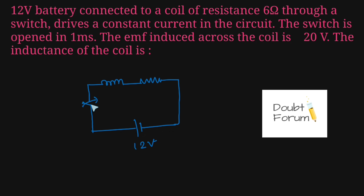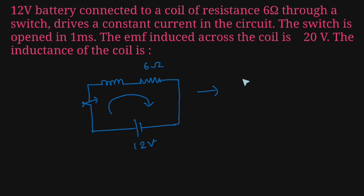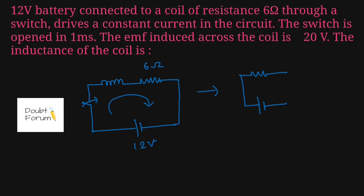Initially, the switch is in its closed position. The resistance is given as 6 ohm, and it is mentioned that there is a constant current flowing in the circuit. In the case of DC voltage, the inductor behaves like a closed circuit, so this circuit represents a resistance connected across a 12 volt battery.